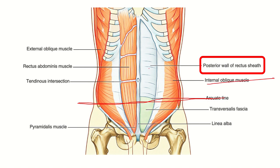Looking at the layers, we can see this white layer which is present from the upper part and descends down. After passing the umbilicus, the structure closes — meaning the structure is not present below this line. This structure is the posterior wall of the rectus sheath. So if a transverse incision is given at two-thirds from the umbilicus and one-third from the symphysis pubis...